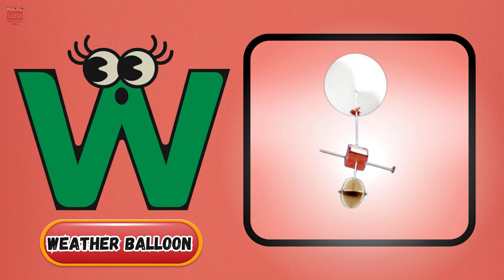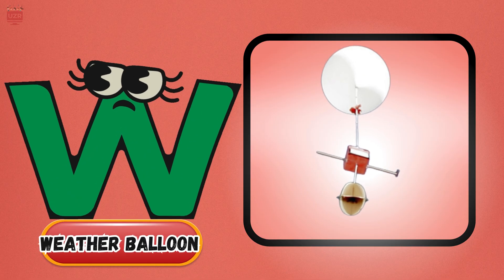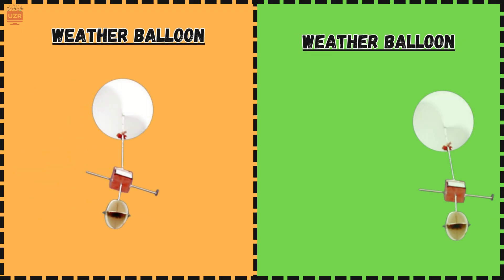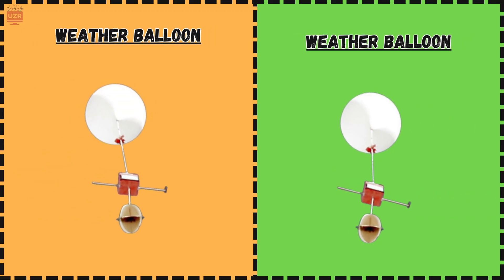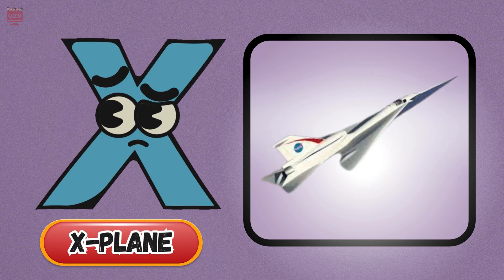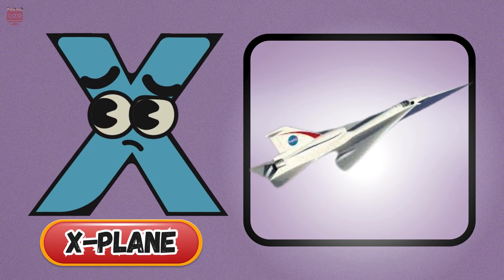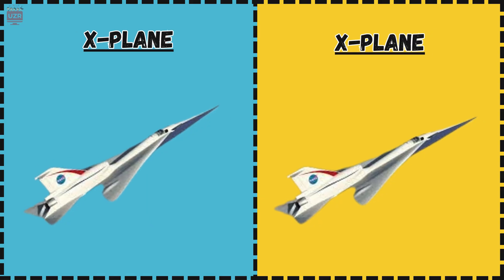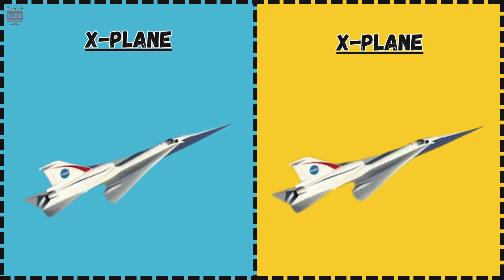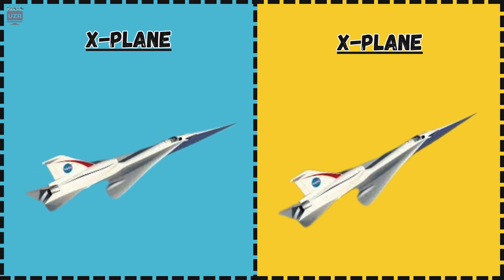W is for weather balloon, rising up to track the skies. X is for X-Plane, testing things that help jets rise.